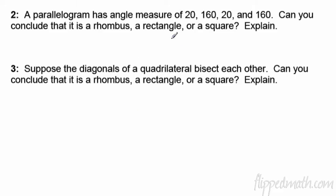How about number two? A parallelogram has angle measures of 20, 160, 20, and 160. Can you conclude it's a rhombus, a rectangle, or a square? Well, I can't really conclude it's a rhombus because it doesn't say anything about the diagonals. We don't know that these are being bisected. Those are the two ways you can figure out it's a rhombus. A rectangle, it's definitely not a rectangle because there's no 90 degree angles. And if it's not a rhombus or a rectangle, it can't be a square. So no, we cannot. No, can't conclude. It might be a rhombus, but we don't know. It could also be just a regular parallelogram.